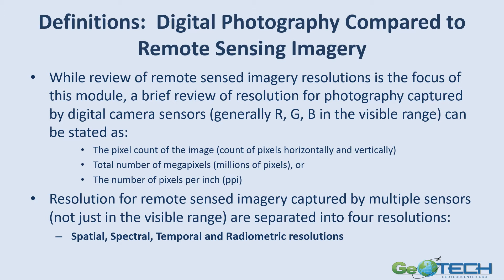First, a definition. We're going to look at digital photography. If you've got a camera or your cell phone, you're probably taking digital photography, and generally these are in three bands — RGB: red, green, and blue — and some actually have infrared too. The resolution is usually stated as the pixel count of the image: how many pixels horizontally and how many pixels vertically, also by megapixel. My cell phone camera has about 12 megapixels. Sometimes you'll also see dots per inch or PPI. Resolution for remote sensing imagery, though, is usually captured by multiple sensors, not just those in the visible range or even infrared, and it's described as different resolutions — the four generally shown are spatial, spectral, temporal, and radiometric.